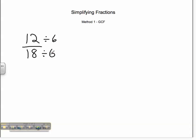Because remember, whatever you do to the top, you have to do to the bottom. 12 divided by 6 is 2. 18 divided by 6 is 3. I have reduced my fraction to the simplest form and it is 2/3.